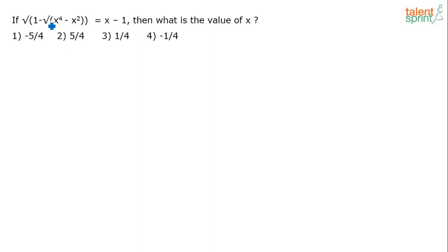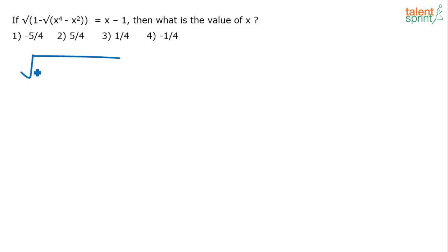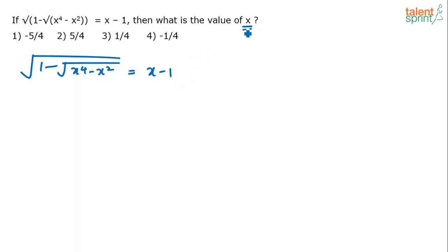If square root of 1 minus square root of x power 4 minus x squared equals x minus 1, then what is the value of x? Let me write it in a way that you all can understand easily: 1 minus square root of x power 4 minus x squared equals x minus 1. He is asking us to find out the value of x.